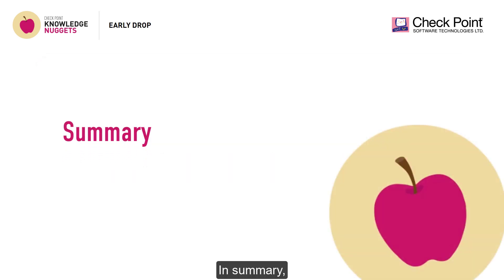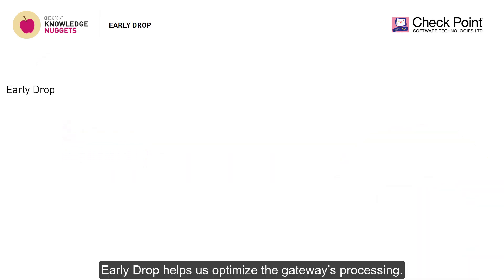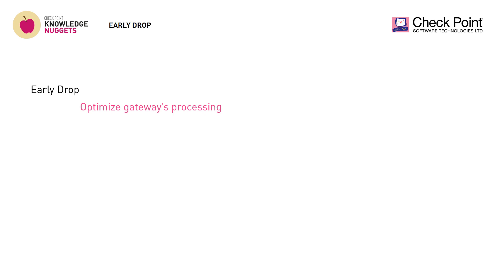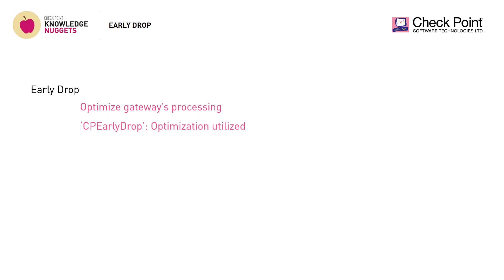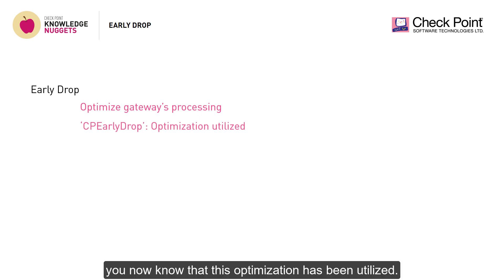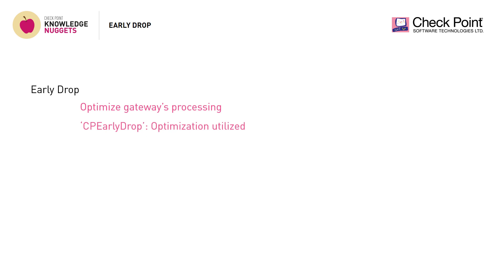In summary, early drop helps us optimize the gateway's processing. If you get a log referring to a rule called CP Early Drop, you now know that this optimization has been utilized.